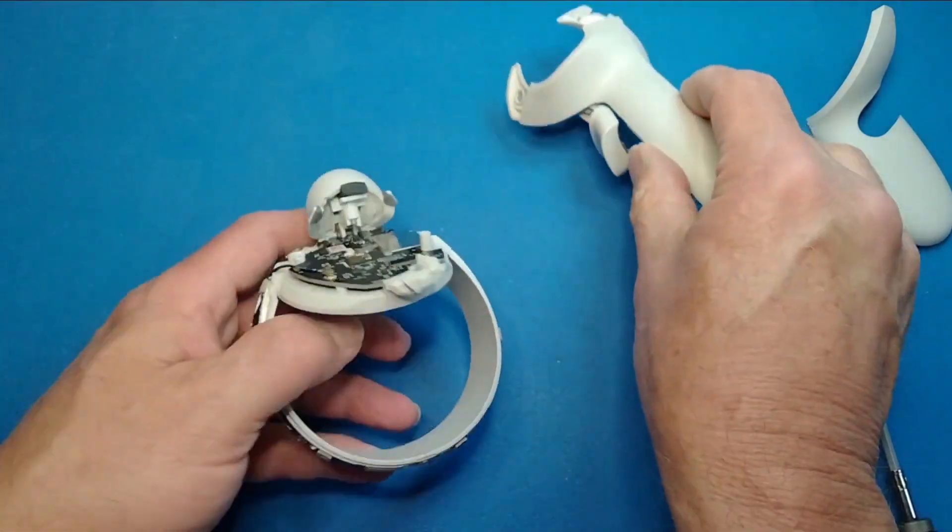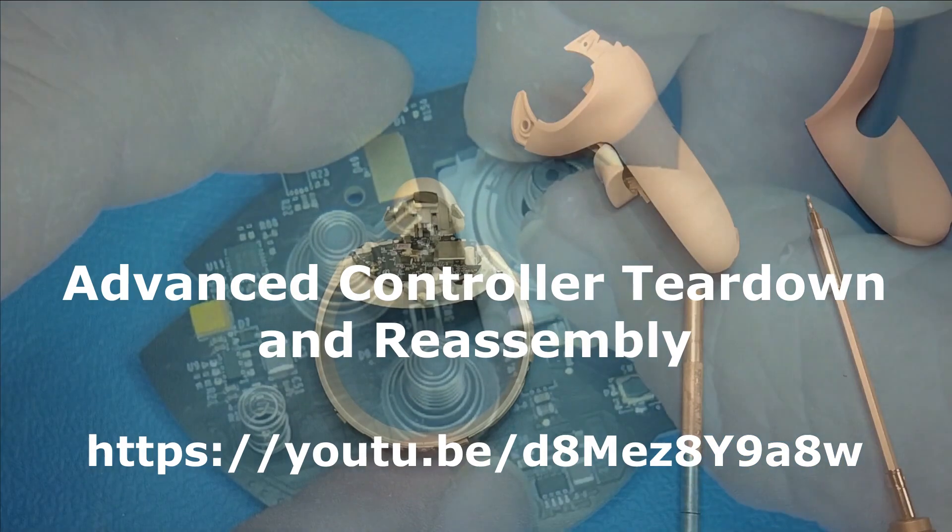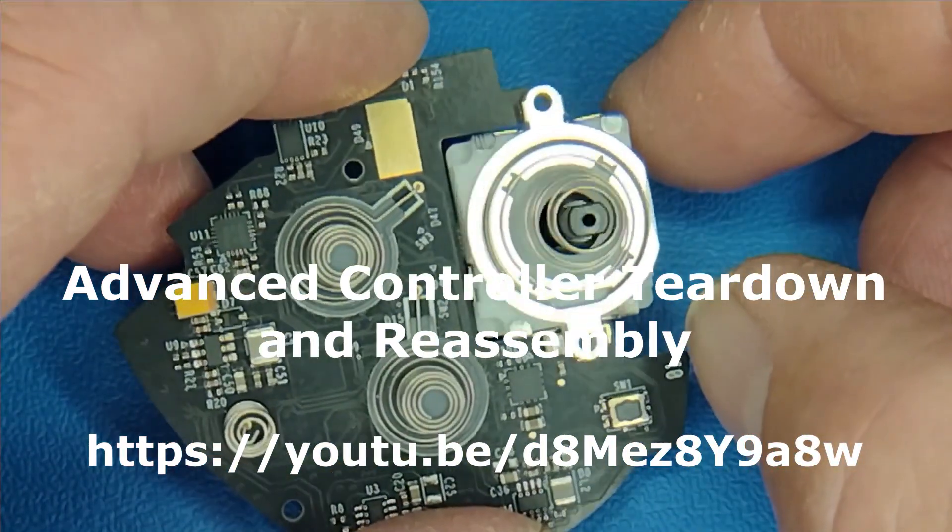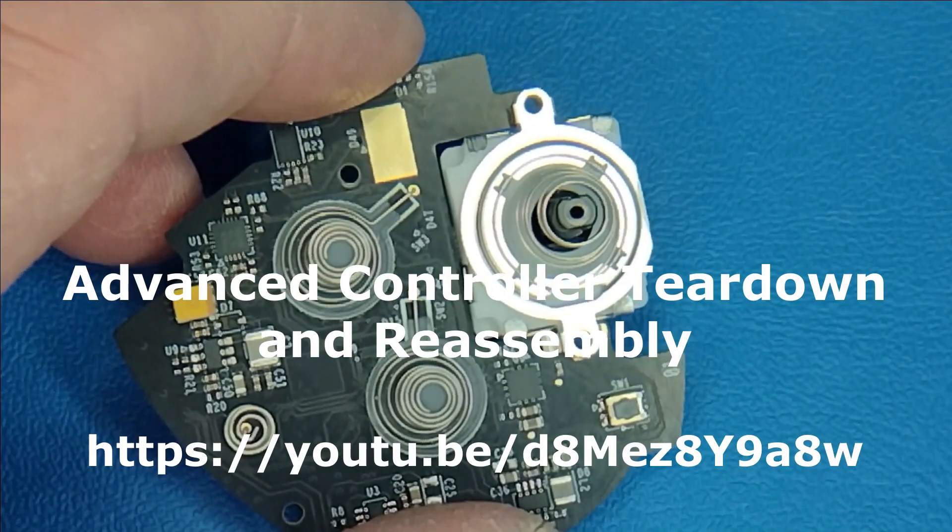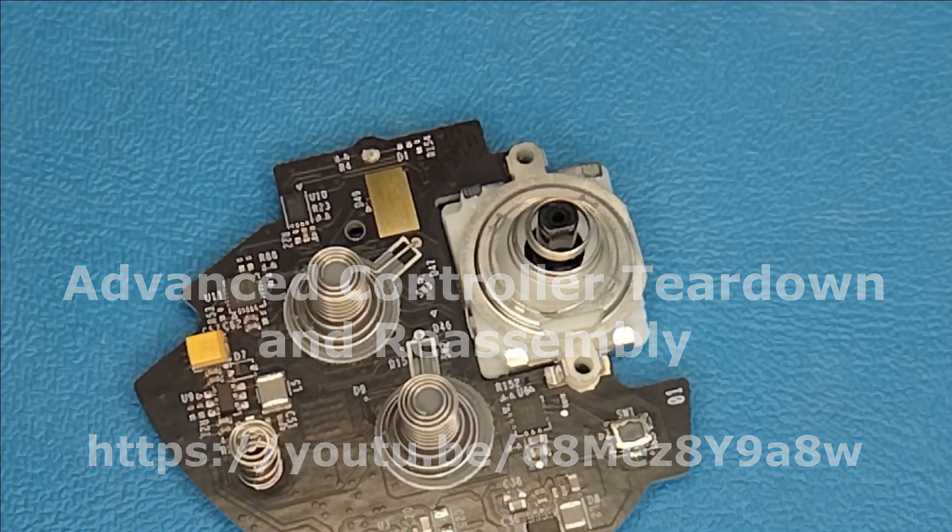Before you get started, just remember your controller is not working now. If it's not working when you're done, you're no worse off. Follow along with the teardown video to the 15 minute 30 second mark where the circuit card gets removed. After that, start this video back up and follow along to reassemble.